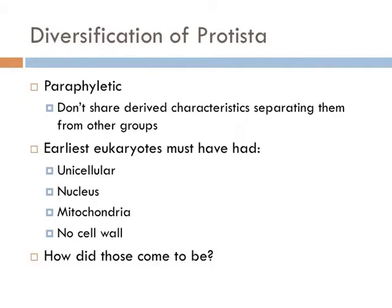Even though protists are paraphyletic, meaning they don't all have synapomorphic characteristics that bind them together, what they do have in common is that they're all eukaryotes. The earliest eukaryotes must have been unicellular and had a nucleus and mitochondria, because all eukaryotes, for the most part, have a nucleus and mitochondria. How did these come to be?